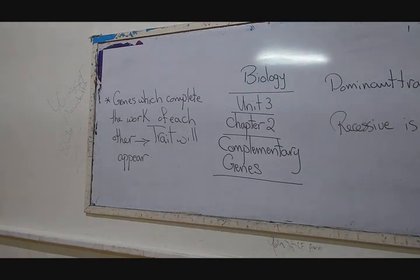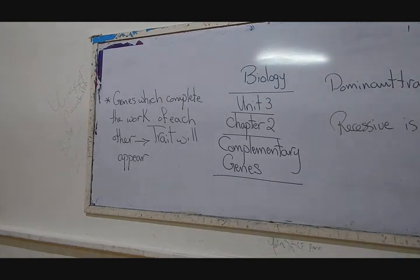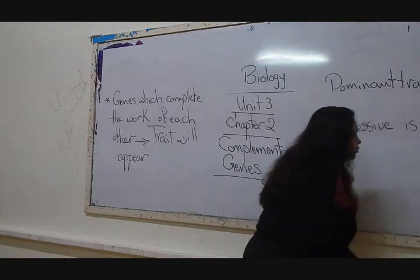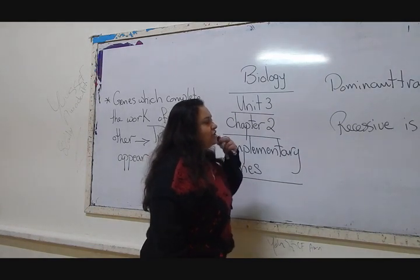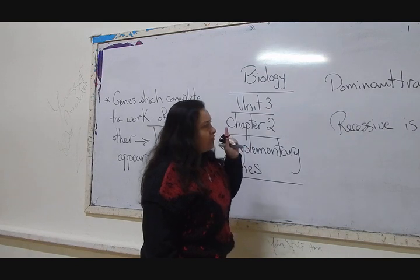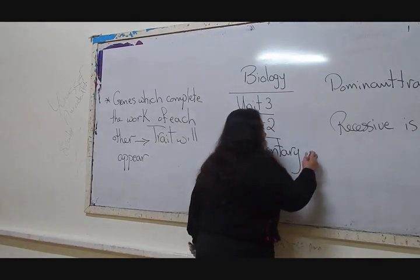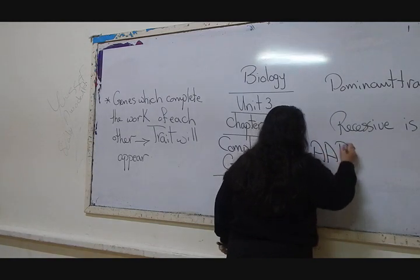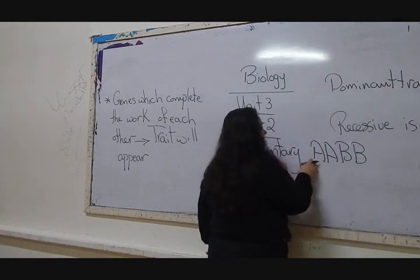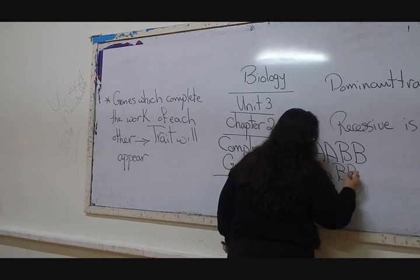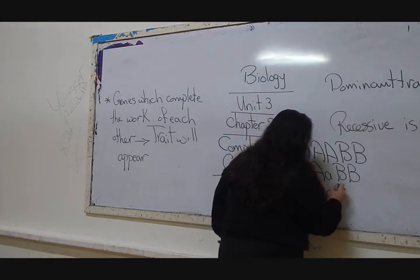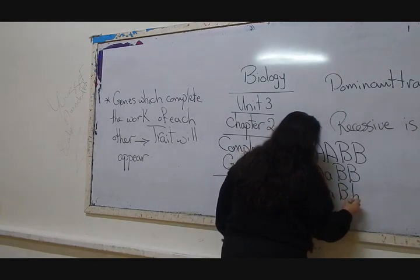These two gene pairs are not alike. One pair has the alleles for gene A, and the other has the alleles for gene B. The genotypes that produce the dominant purple color are: AABB, AaBB, or AABb, or AaBb — all of them contain at least one capital A and one capital B.